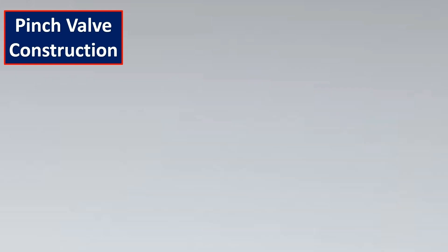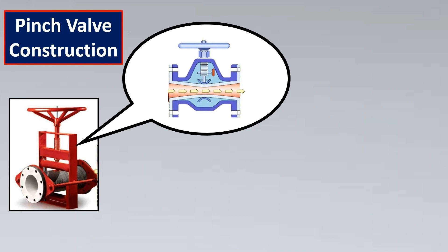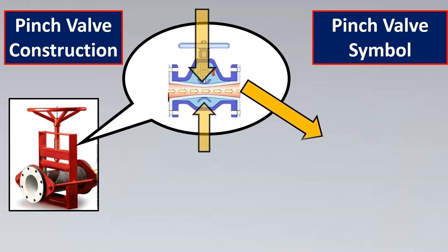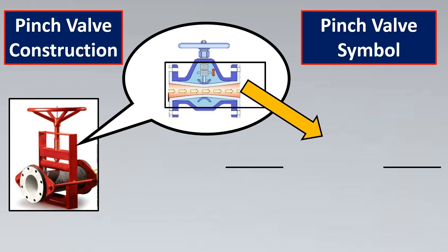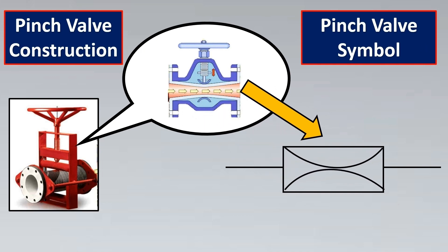Pinch valve construction: inside a pinch valve, forces are applied from above and below the body, which create a pinching effect to modulate the flow — either opening or closing it. To logically make the pinch valve symbol, we first draw the body of the valve, then show pressure applied from the top side and from the bottom side. This pinching effect is shown by the P&ID symbol.